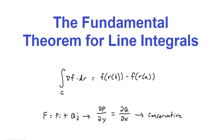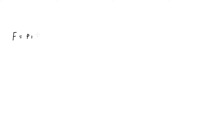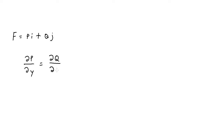Let's take a look at the fundamental theorem for line integrals. If you have a vector field f equal to some function p times i plus another function q times j, in order to find out whether or not a vector field is conservative, all you have to do is take the partial derivative of p with respect to y, and set that equal to the partial derivative of q with respect to x. If they are equal to each other, then we know it is conservative.